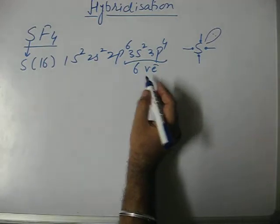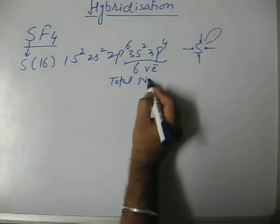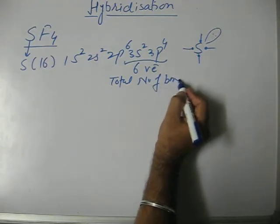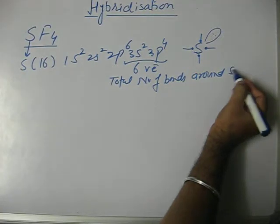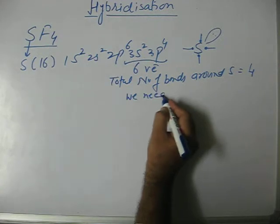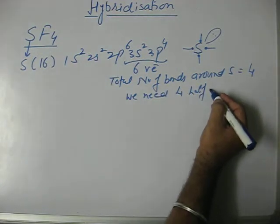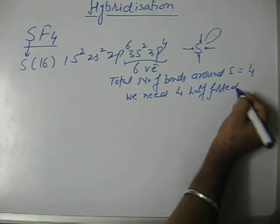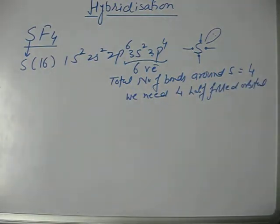Starting from the basics, the total number of bonds around the central atom sulfur is equal to four. Therefore we need four half-filled orbitals around sulfur because only then it can form four bonds.